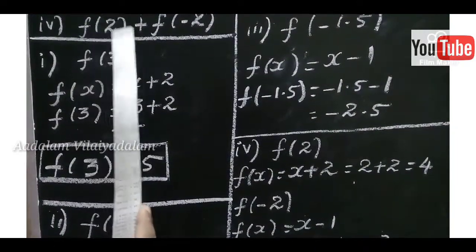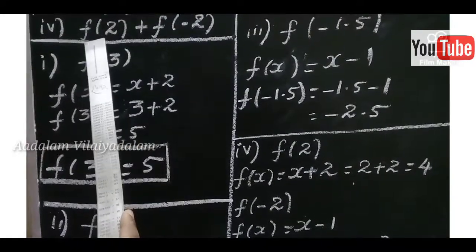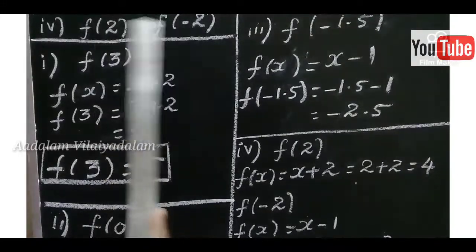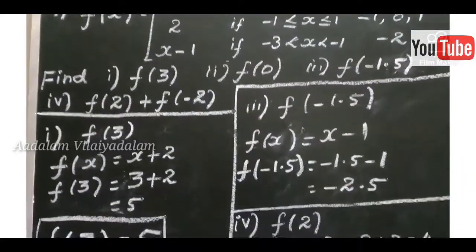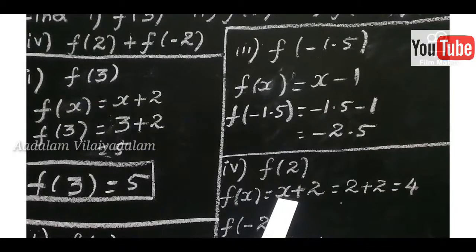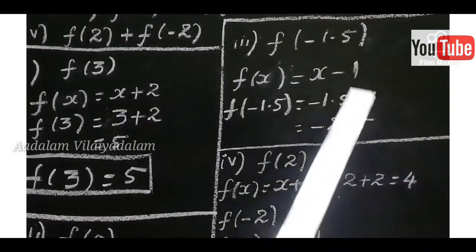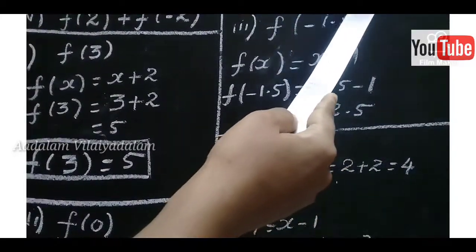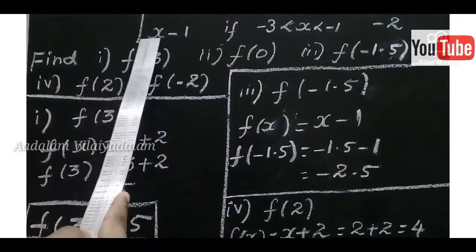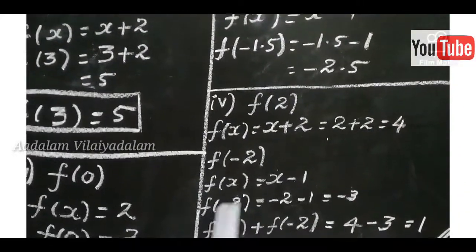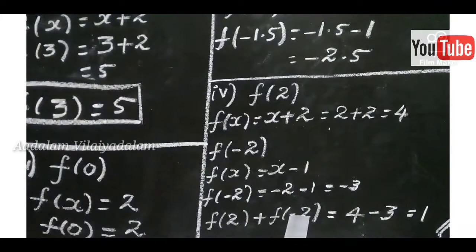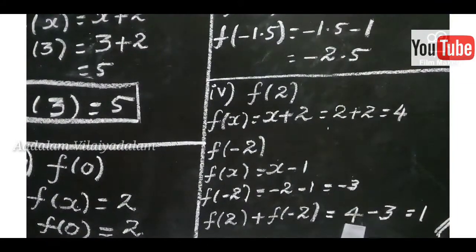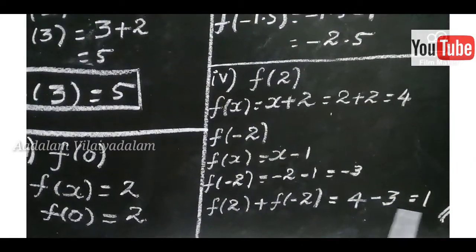Fourth: F of 2 plus F of minus 2. First find F of 2: X equals 2 falls in the first function, F of X equals X plus 2. Substituting X equals 2: 2 plus 2 equals 4. Next find F of minus 2: X equals minus 2 falls in the third function, F of X equals X minus 1. Substituting X equals minus 2: minus 2 minus 1 equals minus 3. So F of 2 plus F of minus 2 equals 4 plus minus 3, the answer is 1.